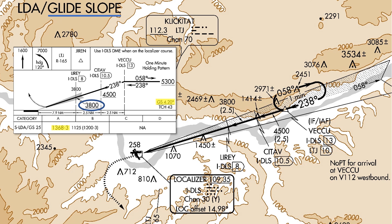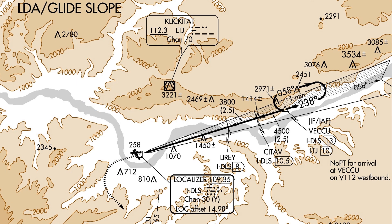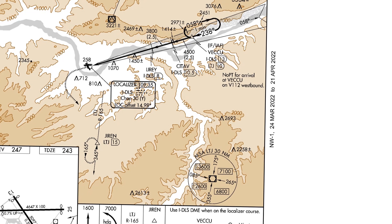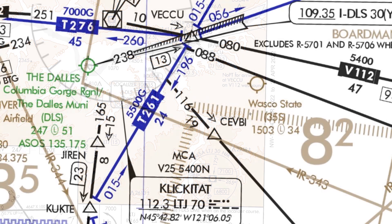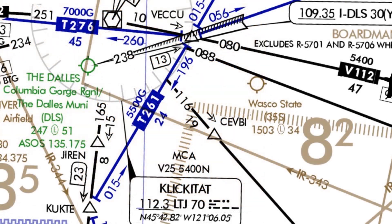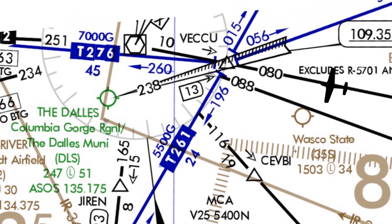Notice also the steeper glide slope angle on this approach — there are definitely a number of uncommon things here. The initial approach fix is VECU. We can arrive at VECU westbound along Victor 112. Even on the enroute chart, we can use the LDA to identify VECU as the intersection of the airway we're flying on, the 080 radial from the Klickitat VOR, and the LDA course.